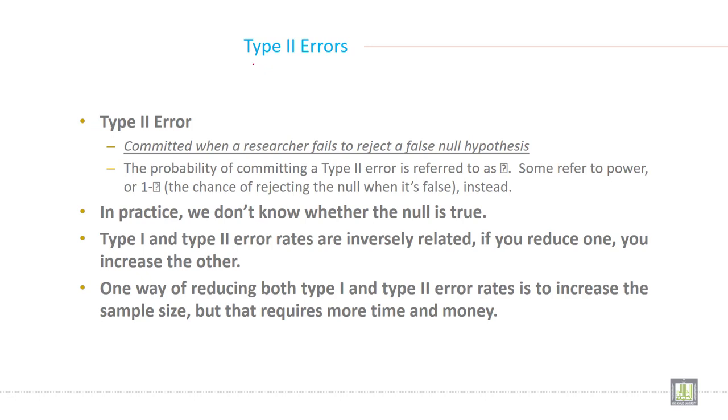So let's start with type 2 error. What is type 2 error? It is committed when a researcher fails to reject a false null hypothesis. The probability of committing a type 2 error is referred to as beta.